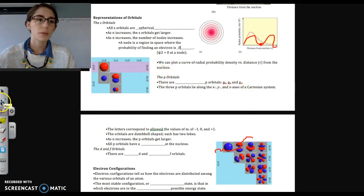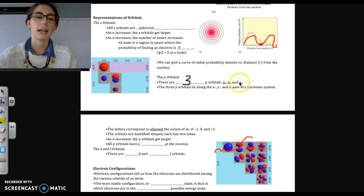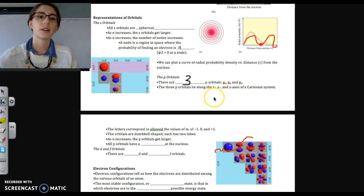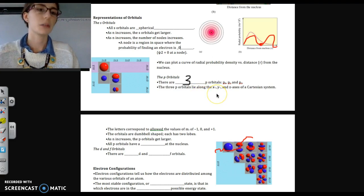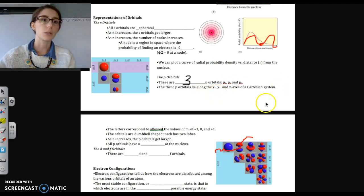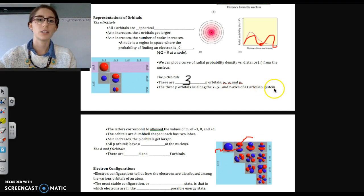Okay, the p orbitals, remember that there are three p orbitals. And we have named them px, py, and pz. So you'll see that designation on the aufbau diagrams. You don't have to memorize that. We're treating them all equally for the purposes of this course. What's different about them, though, is their orientation. So they lie along the x, y, and z axes of a Cartesian system.